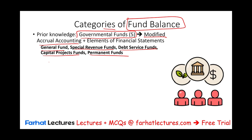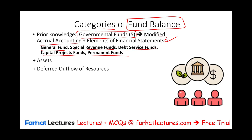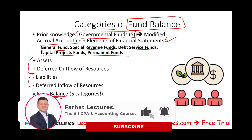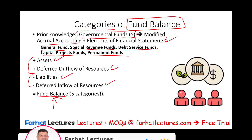Also, what you need to know in order to understand the fund balance is the elements of the financial statements, which we also covered — such as assets, deferred outflow of resources, liabilities, deferred inflow of resources. And when we net them out — assets plus deferred outflow of resources minus liabilities and deferred inflow of resources — we'll get to the fund balance. This is what we need to focus on, because the other elements we covered in a separate recording.